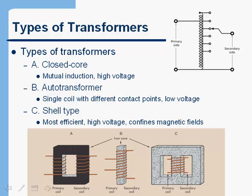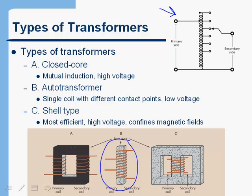The next type is the auto transformer. In an auto transformer there's only one coil, but with different contact points. It's really just one coil of wire where we connect the primary side to two points along the coil, and then the secondary side connects to the same point on one side but can connect to different points on the other side. This allows it to pick different voltages — maybe doubling the voltage or multiplying it by three. This is called self-inductance, where one coil does the job of two.